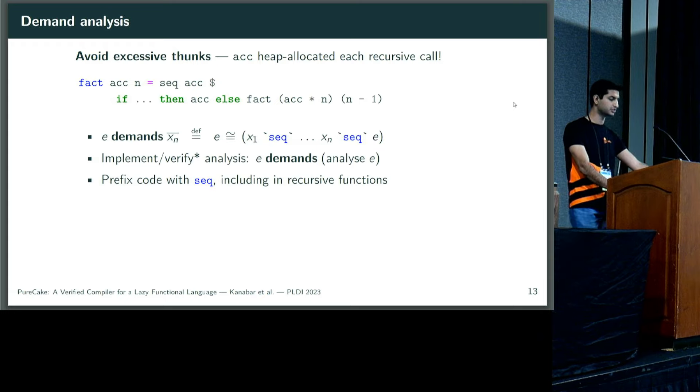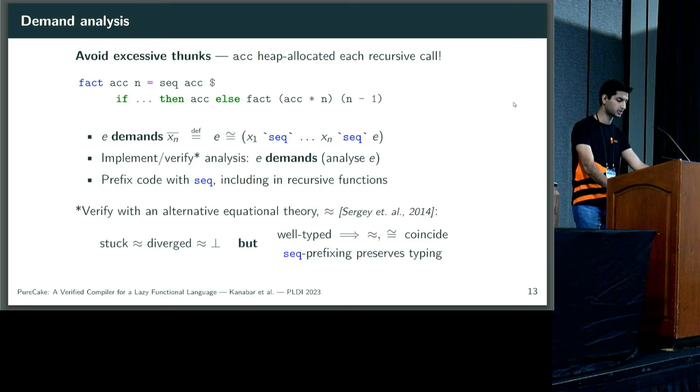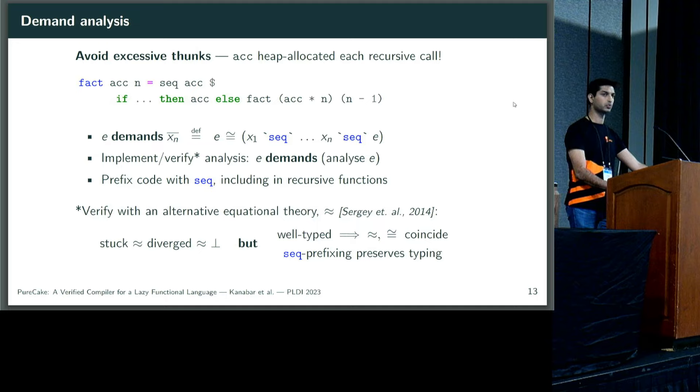And almost by construction, we can transform code with these seq annotations, including in recursive functions like the one at the top of the slide. There's a slight caveat to how we choose to verify demand analysis. We use an alternative equational theory which is slightly weaker following prior work. It's weaker in one very strict sense. It considers stuck or ill-typed or crashing programs to be equivalent to those that diverge, both as sort of a bottom element in the semantics. Now we have to be careful that we don't convert between crashing and diverging programs. Fortunately, we know that for well-typed code, both of these things coincide because well-typed programs can't crash. Demand analysis receives well-typed code from inference and we prove it preserves well-typing.